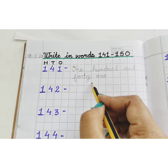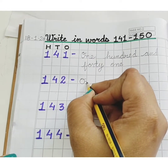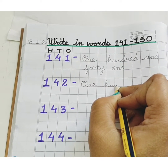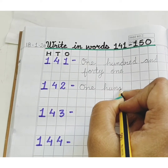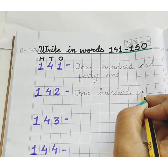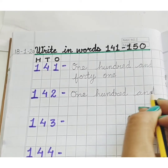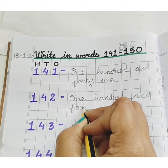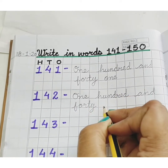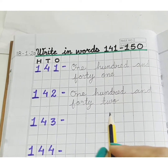ONE. H, U, N, D, R, E, D — ONE HUNDRED. AND F, O, R, T, Y — FORTY. T, W, O — TWO. One Hundred and Forty Two. 142.